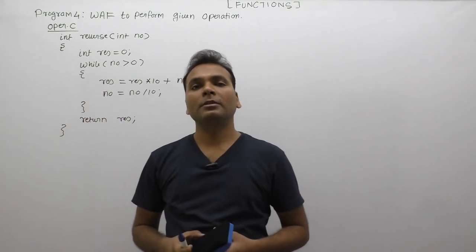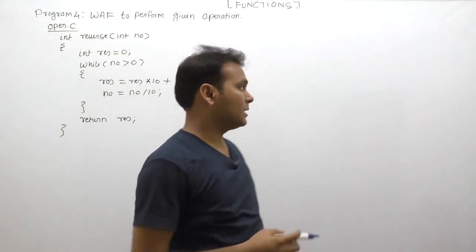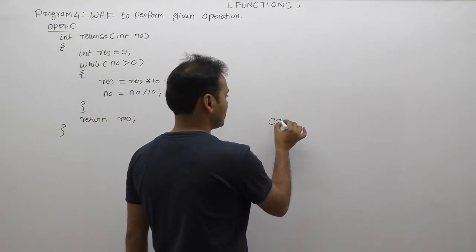The next operation is to count the digits of a given number. This operation is similar to the reverse operation. In this case, we are creating a function named count, count the digits.